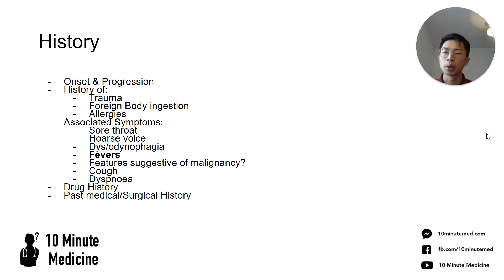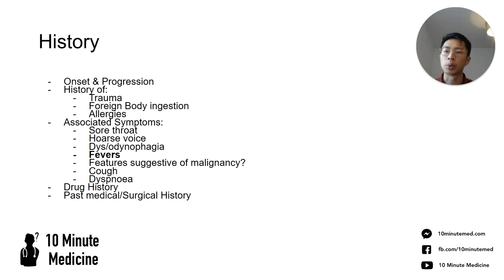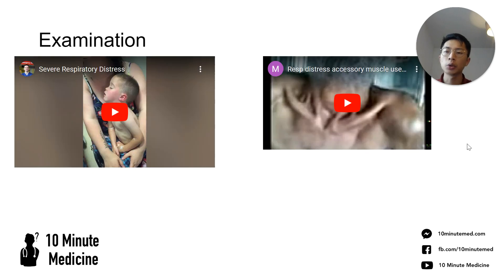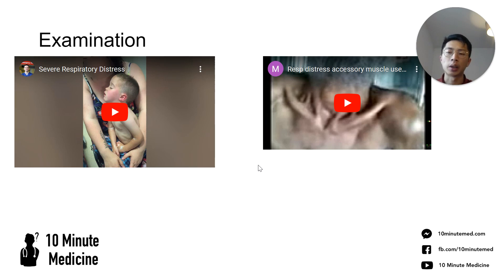Regarding the history — we've covered a lot of it already — onset and progression I think is the most important thing, as it gives you an idea of how much time you have to deal with the situation and who you should be calling. I've got two videos here — one of a child and one of an adult — both in respiratory distress. I want you to observe and note down what you can see. We'll go through them afterwards.